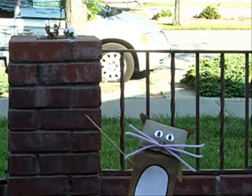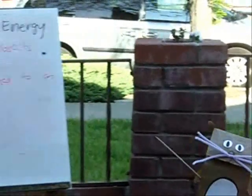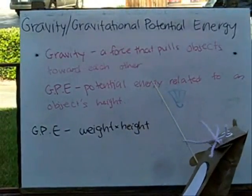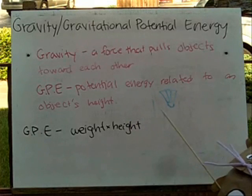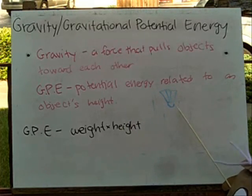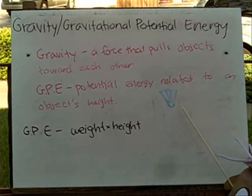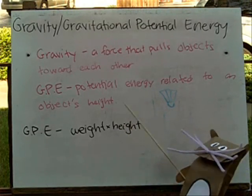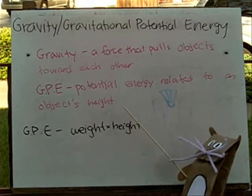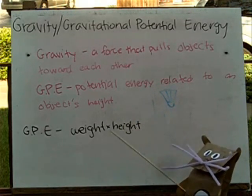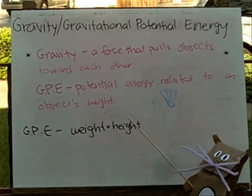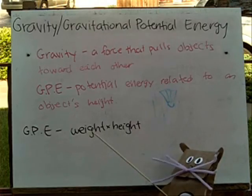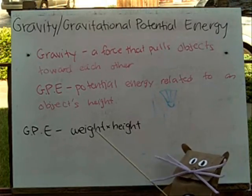Another concept is gravity and gravitational potential energy. Gravity is a force that pulls objects toward each other. In badminton, gravity pulls the shuttlecock down so players can hit it back up. Gravity also keeps players on the ground. Gravitational potential energy is potential energy related to an object's height. The higher you hit the shuttlecock, the higher its gravitational potential energy is. To calculate GPE, you take the weight times the height.